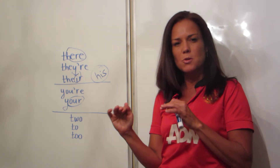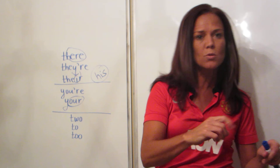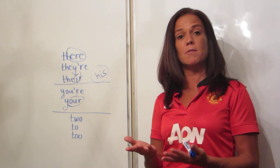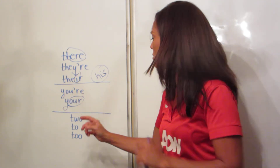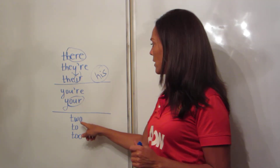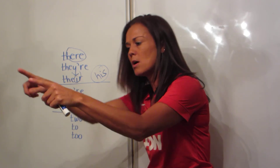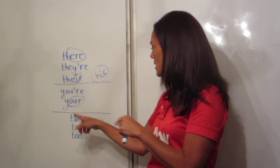To is a preposition — it's your most basic two. I'm going to the store. I'm giving a gift to you. So I go somewhere; I go to the place, to the house.